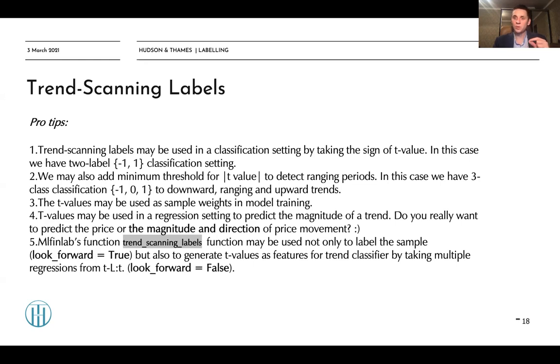What you do in this case is start fitting regressions from t-L up till t_0. So you will fit this regression, this kind of regression, and this kind of regression, and find the one which yields maximum t-value. In this case, it is a very good alternative to widely used technical features because this approach has many statistical properties, and t-values are quite good in detecting those kinds of trends.